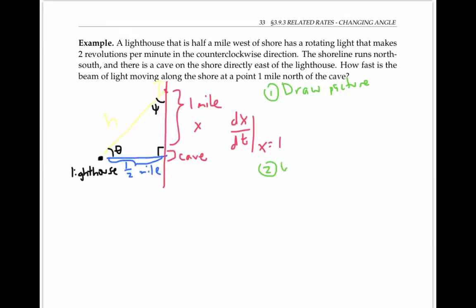Next, we want to write down equations to relate the quantities of interest. Whenever I see a right triangle in a problem, I'm tempted to write down the Pythagorean theorem, which in this case would say one half squared plus x squared equals h squared. But in this particular problem, it doesn't look like that's going to help us much, because the Pythagorean theorem would relate x and h, but we don't have any information about how h is changing.